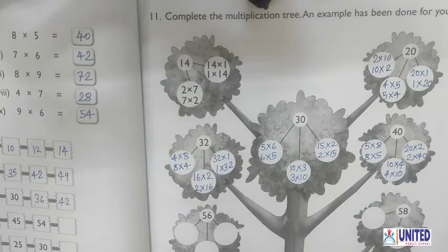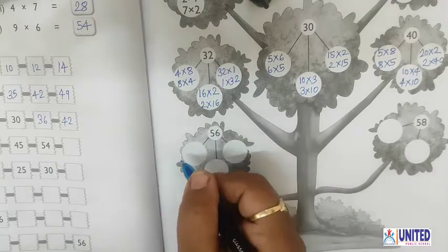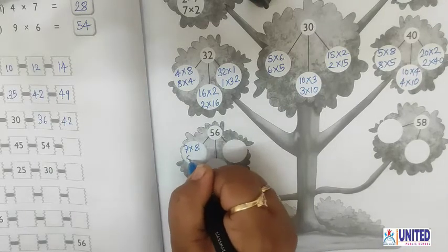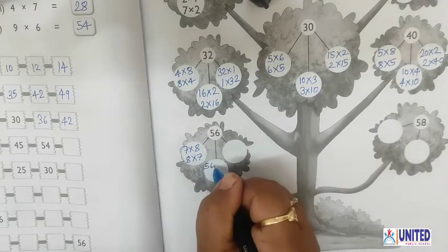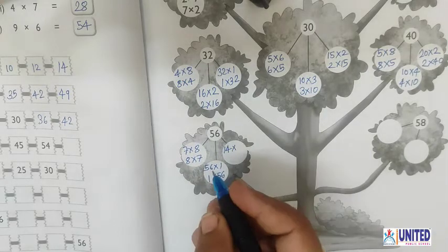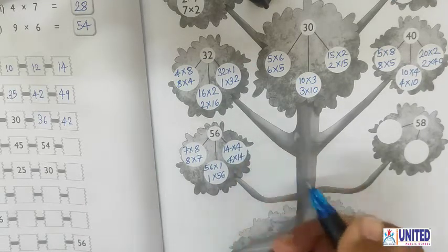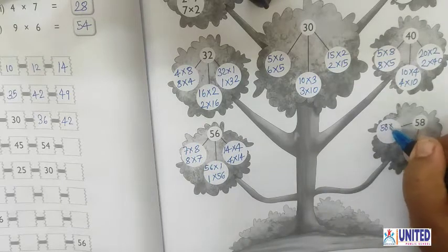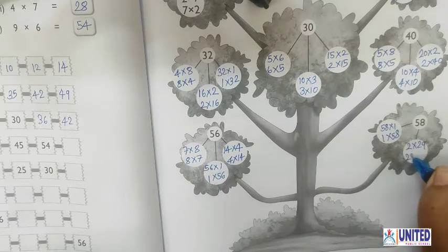The next number is 56: 7×8=56, 8×7=56. Also 56×1=56 or 1×56=56, and 14×4=56 or 4×14=56. First write 58×1=58 and 1×58=58. Then 2×29=58 and 29×2=58. So by using tables you can complete this multiplication tree.